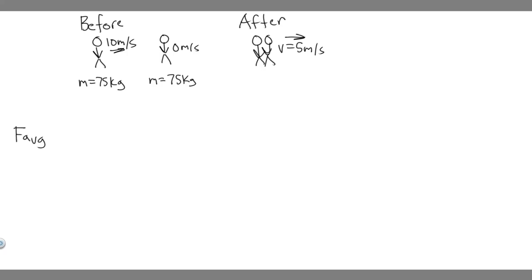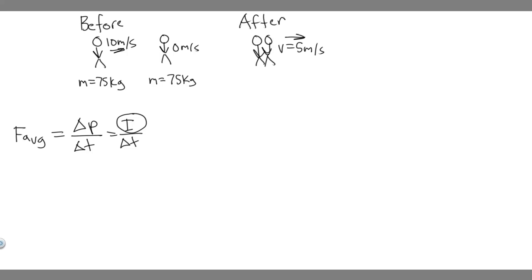We have this thing called F average — the average force experienced — and it's equal to the change in momentum over the change in time. The change in momentum is the same thing as the impulse, so it's the impulse over the change in time. We know F average, so if it's greater than 4,500, they're going to break a bone. The impact time in this case is 0.1 seconds.